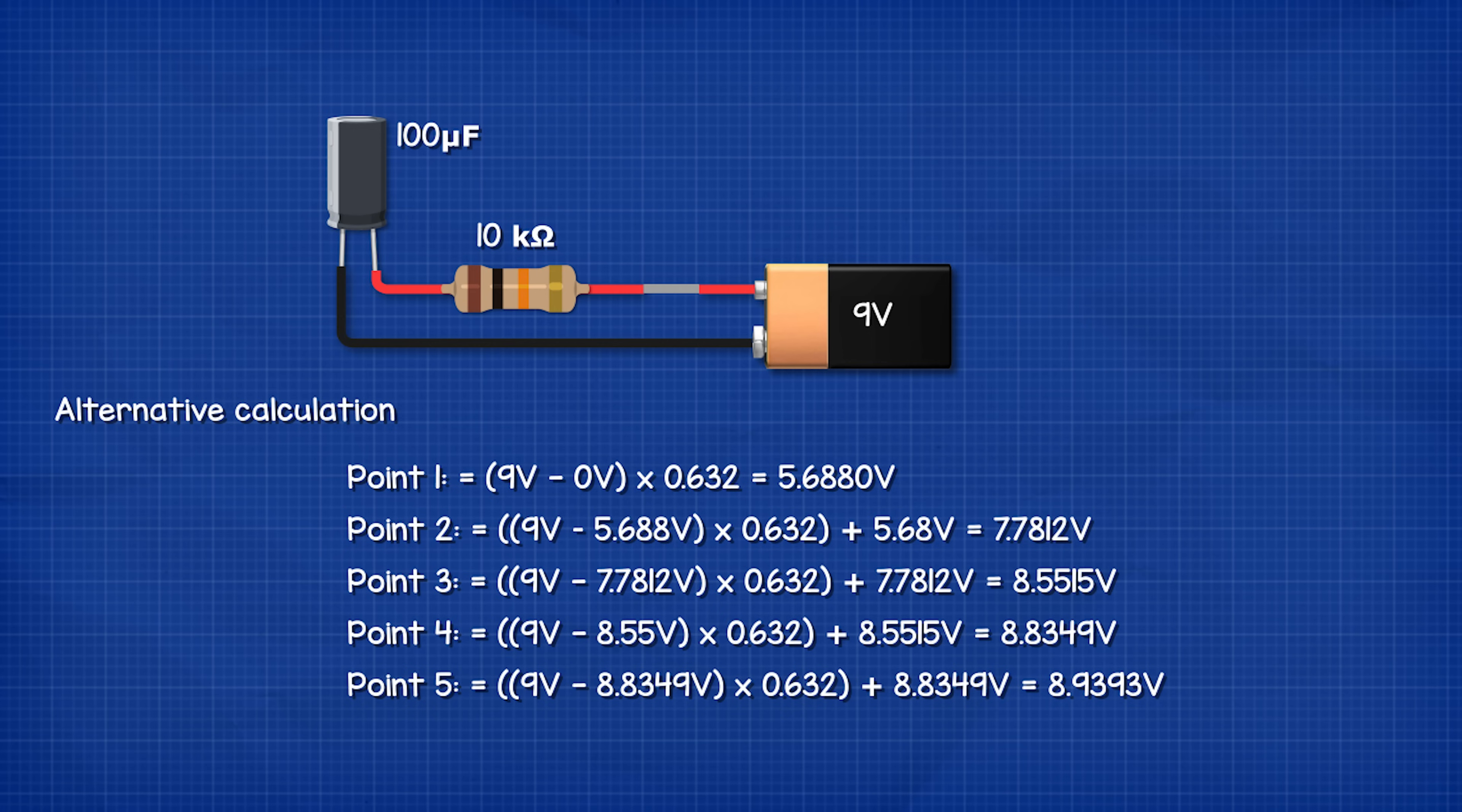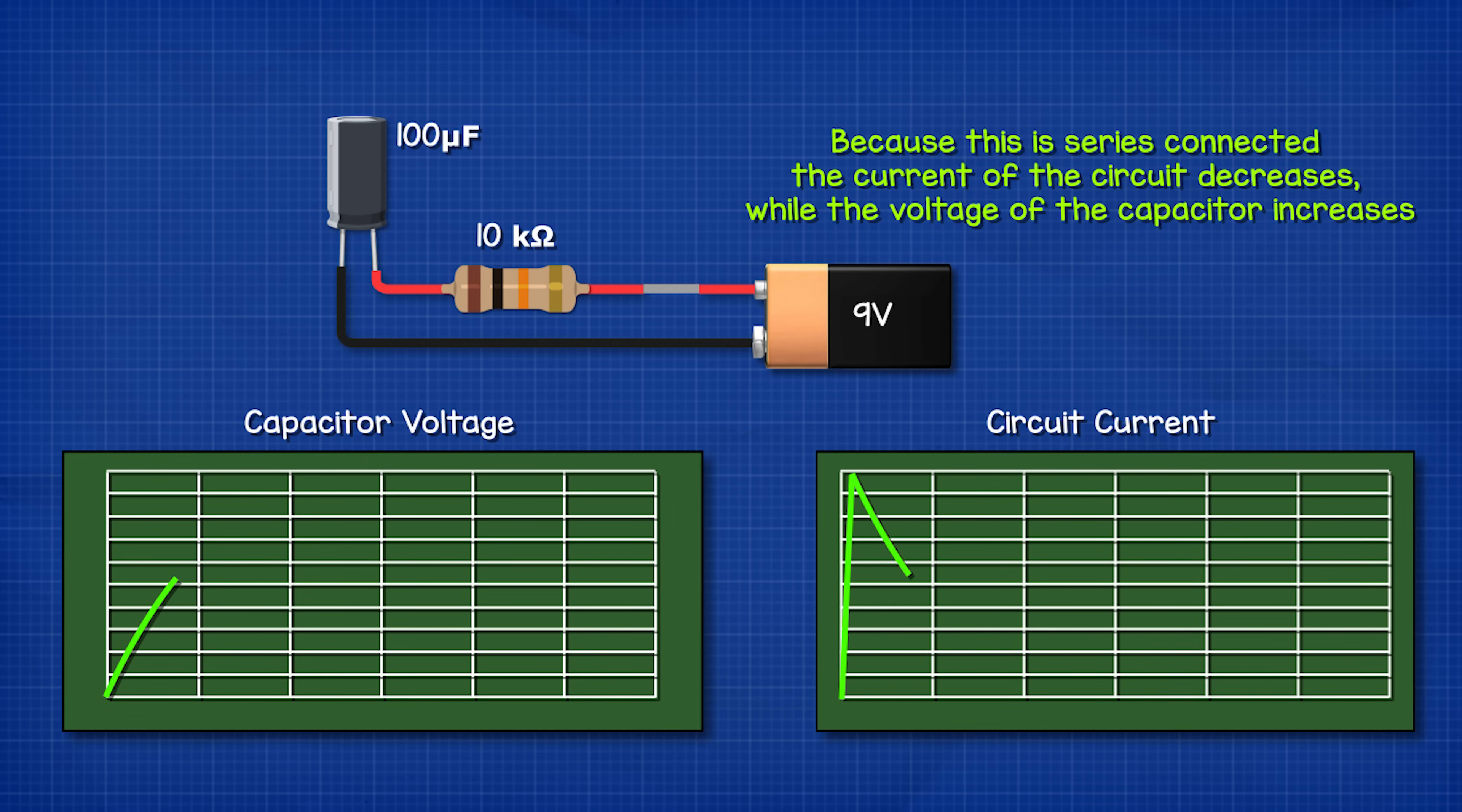If you needed a more precise answer we could also calculate each point like this. Remember because this is in series the current of the circuit decreases while the voltage of the capacitor increases. Once at full voltage no current will flow in the circuit.